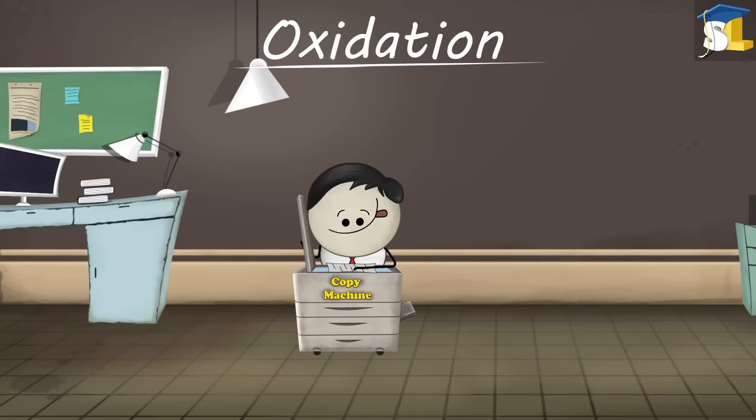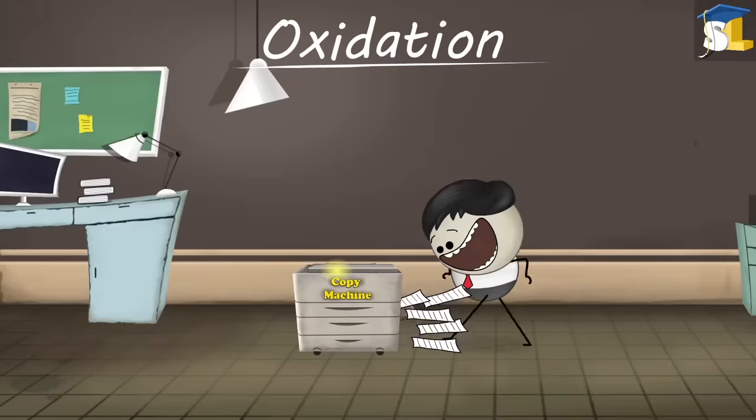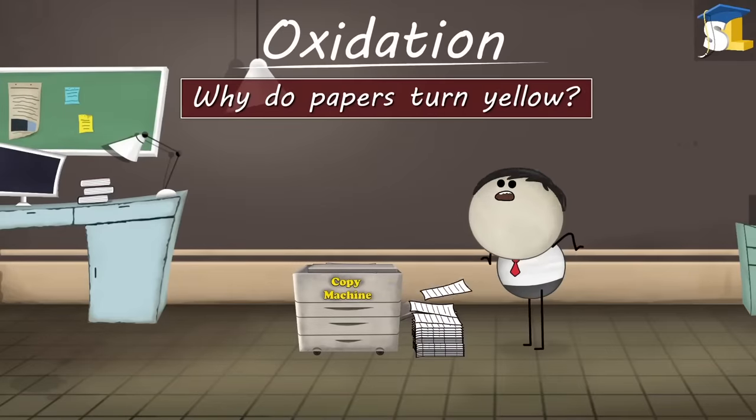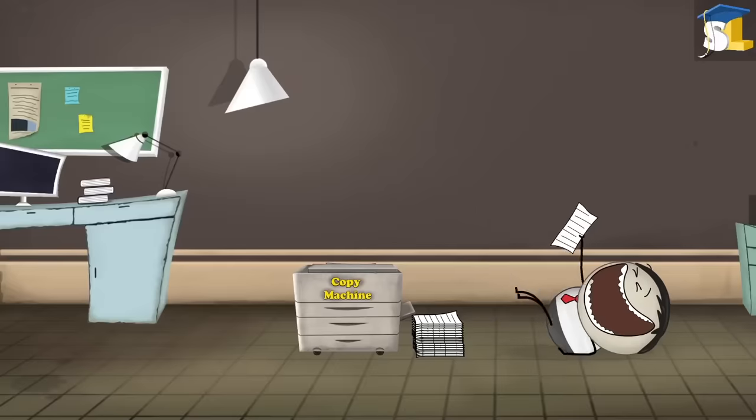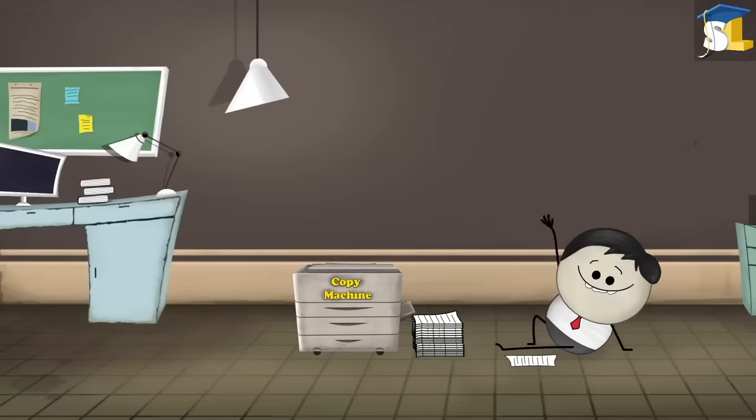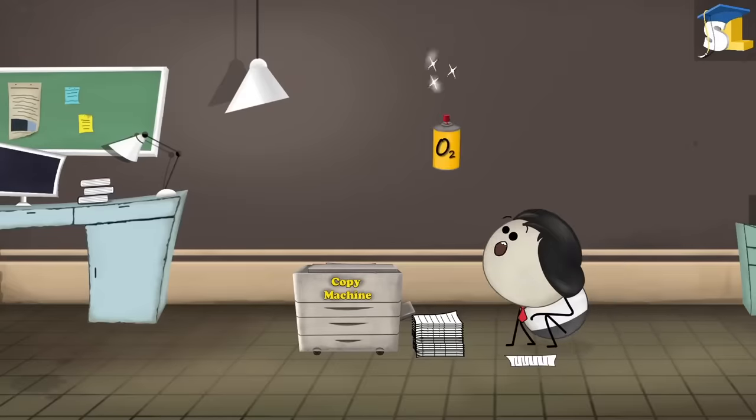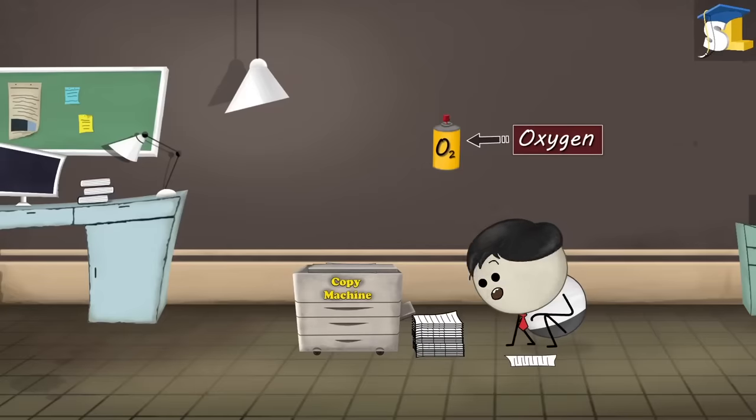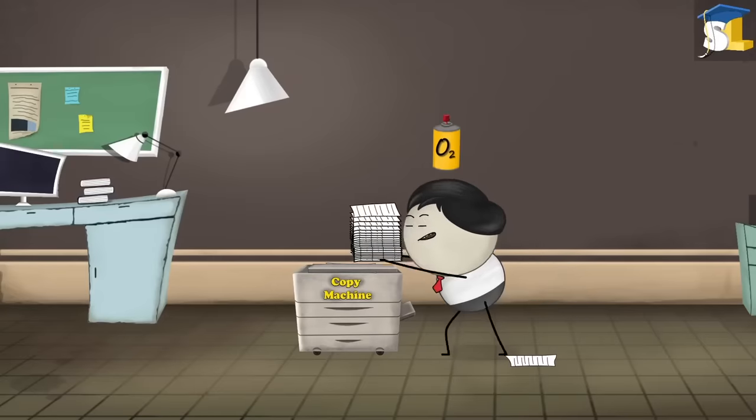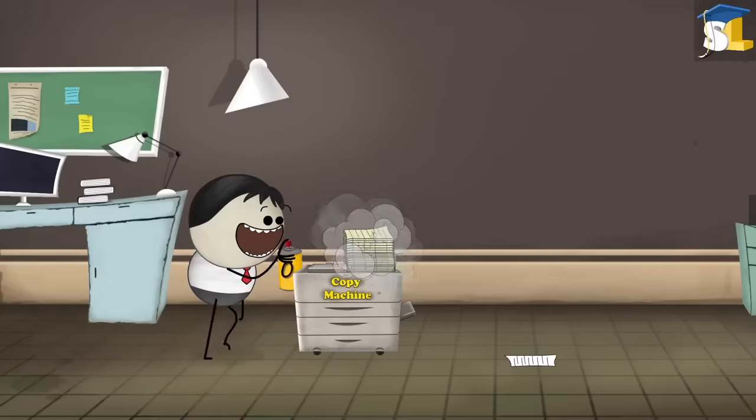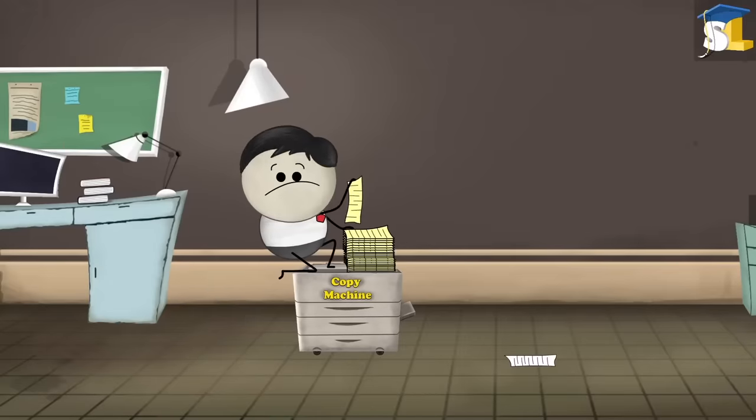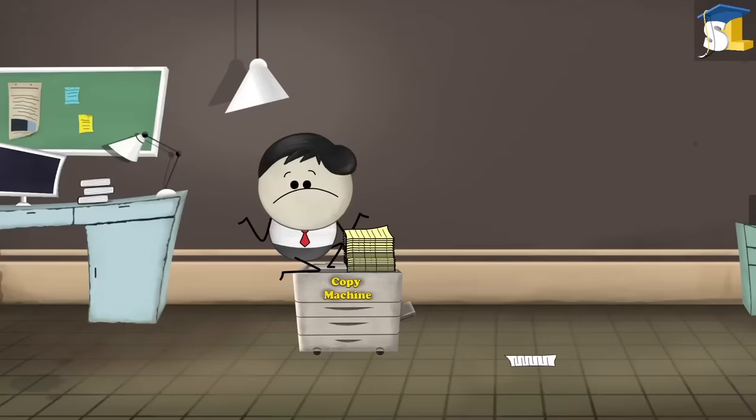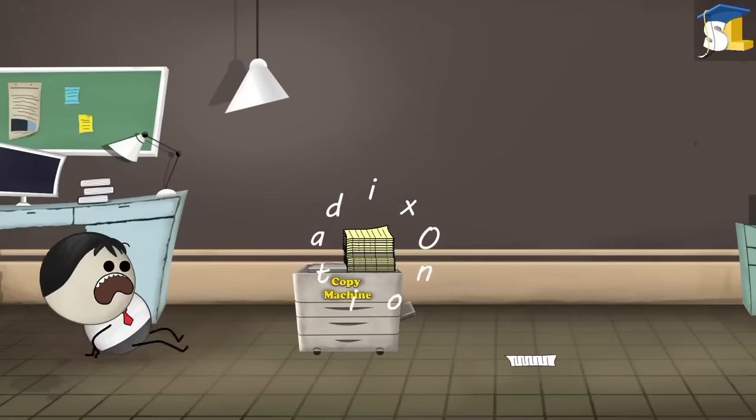Oxidation. Why do papers turn yellow? They really do. You don't believe me? Alright. Then why don't you spray some oxygen on the papers. See, I was correct. Do you know why this happens? This happens mainly because of oxidation.